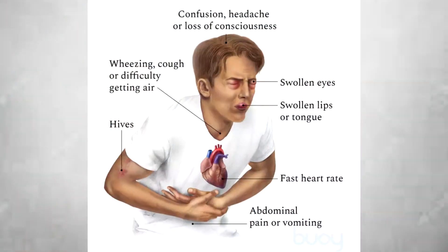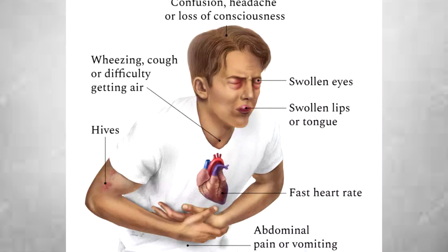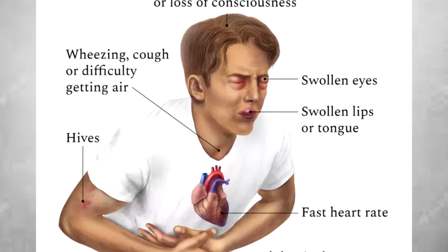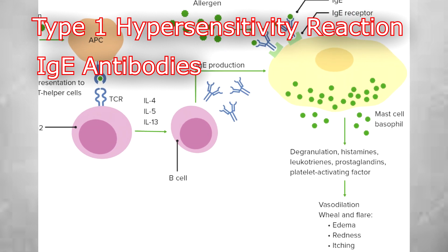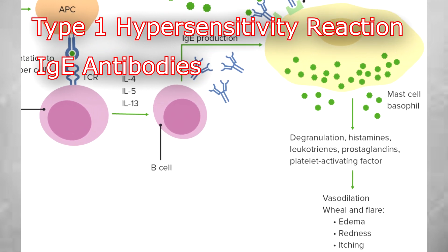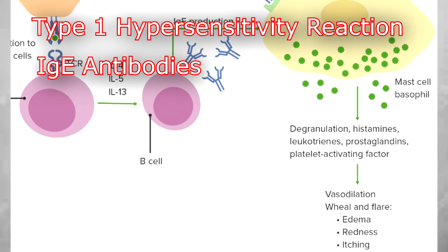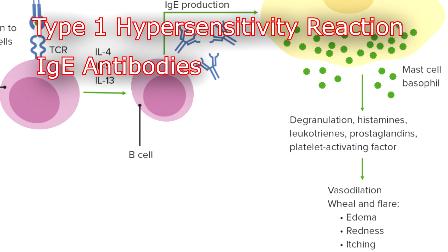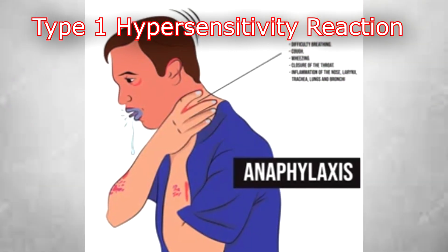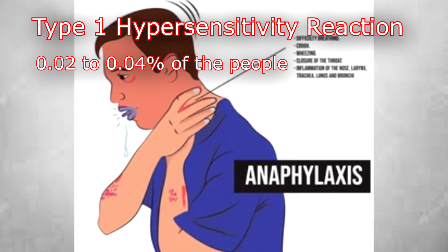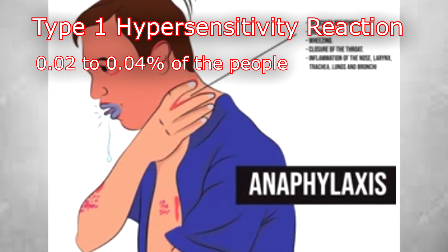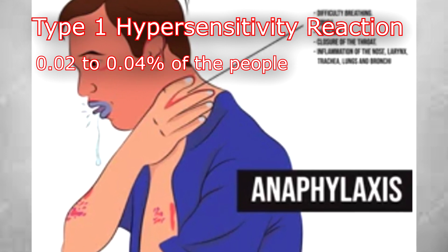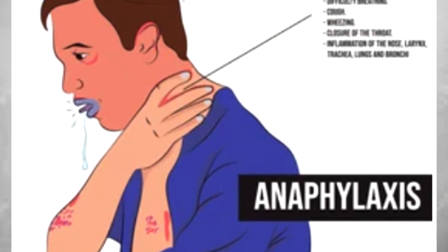Penicillin can cause severe allergic and anaphylactic reactions that can prove fatal. These are type 1 hypersensitivity reactions mediated by IgE antibodies. IgE antibodies cause degranulation of mast cells and release histamine and other pro-inflammatory mediators. Such reactions occur only in 0.02 to 0.04% of the people — that means 1 out of 2500 or 5000 people. The percentage is very low.